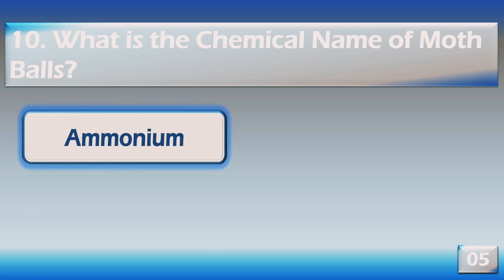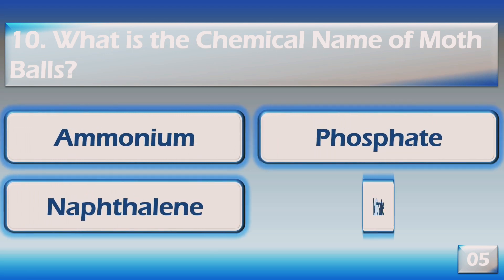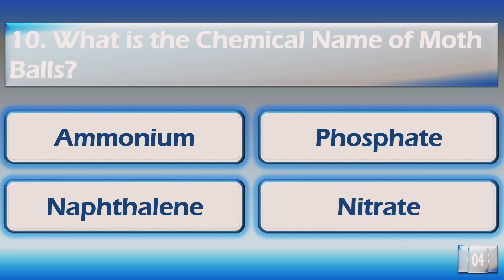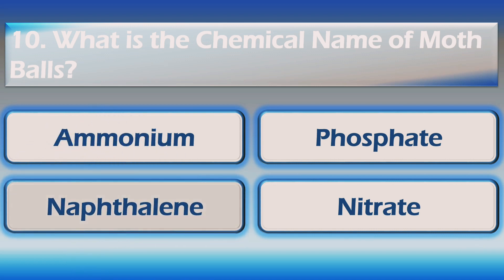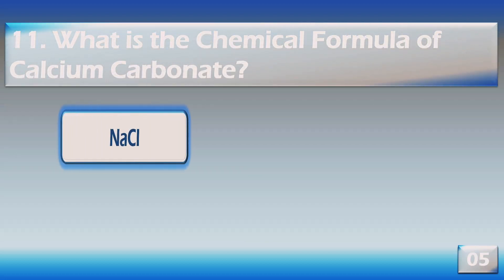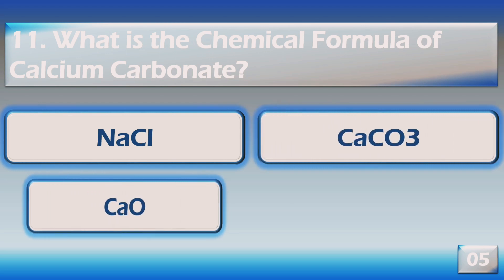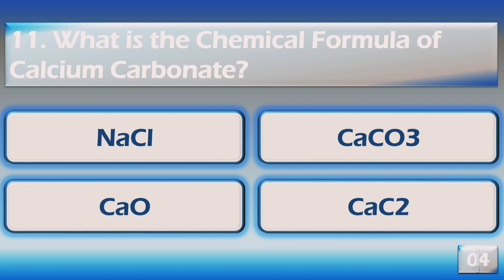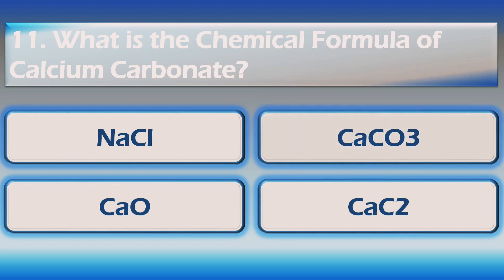What is the chemical name of moth balls? The right answer is naphthalene. What is the chemical formula of calcium carbonate? The correct answer is CaCO3.